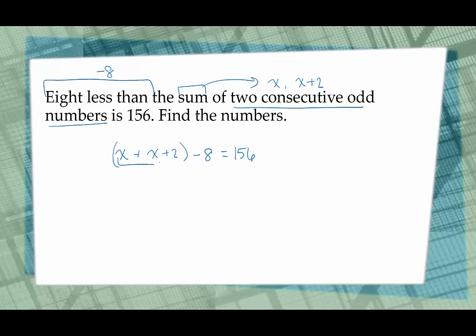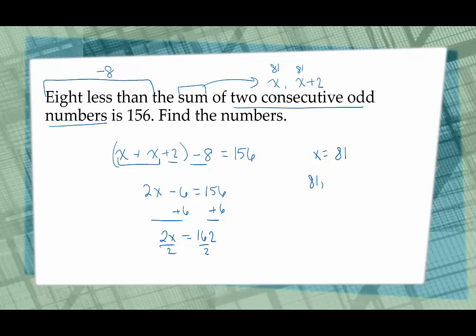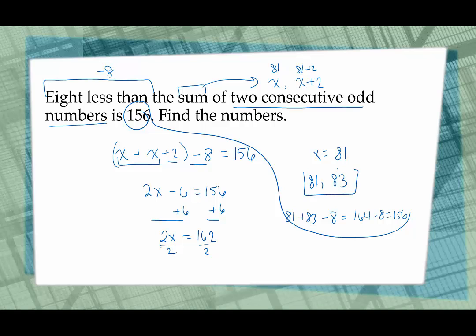Combining like terms: x plus x is 2x, and 2 and negative 8 makes negative 6, so 2x minus 6 equals 156. Add 6 to both sides: 2x equals 162. Divide both sides by 2: x equals 81. My first consecutive odd number is 81, and the next is 81 plus 2, which is 83. Checking: 81 plus 83 is 164, and 164 minus 8 is 156. These are our two consecutive odd integers.